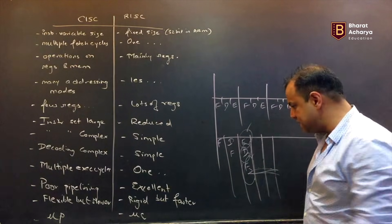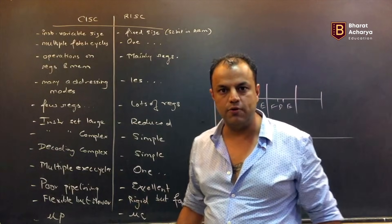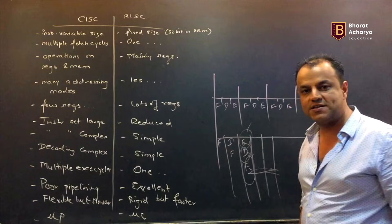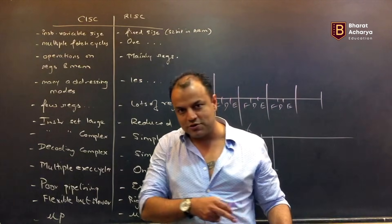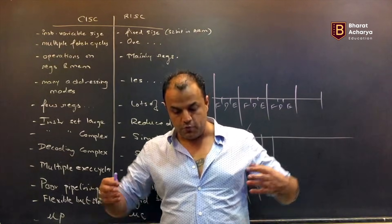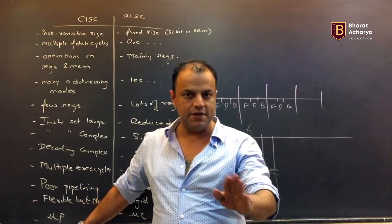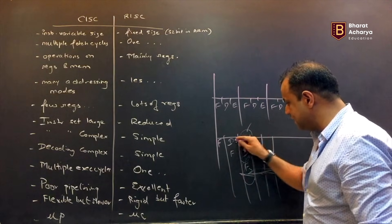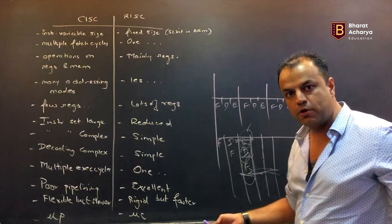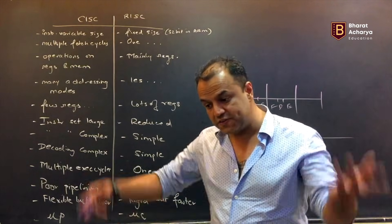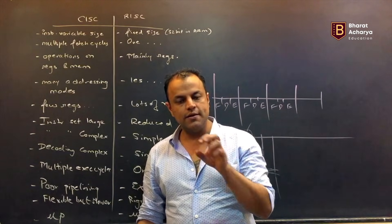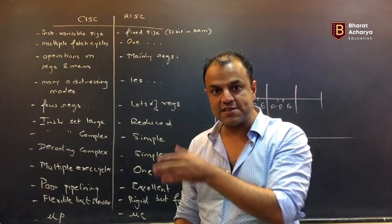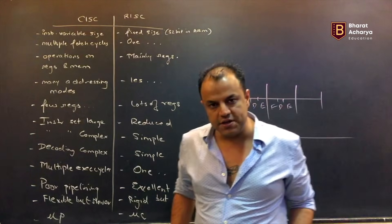If instructions take different cycles for fetching, the pipeline cannot move ahead — because until you've fetched an instruction, how can you decode it? If decoding takes extra time, the other stages get stuck. If execution takes extra time, the other stages get stuck. There are three stages moving in a chain — if one slows down, it affects the others. For perfect pipelining, you have to streamline operations so everything requires only one cycle. This is not true for a CISC processor — instructions take different time for fetching, different time for execution because memory operands are allowed, and different time for decoding because of complex opcodes. So CISC processors, even though pipelined, never give picture-perfect pipelining — there are always empty spots called pipeline bubbles. That never happens in a RISC processor. So being a three-stage pipeline, RISC gives you performance much better than six-stage CISC pipelines.